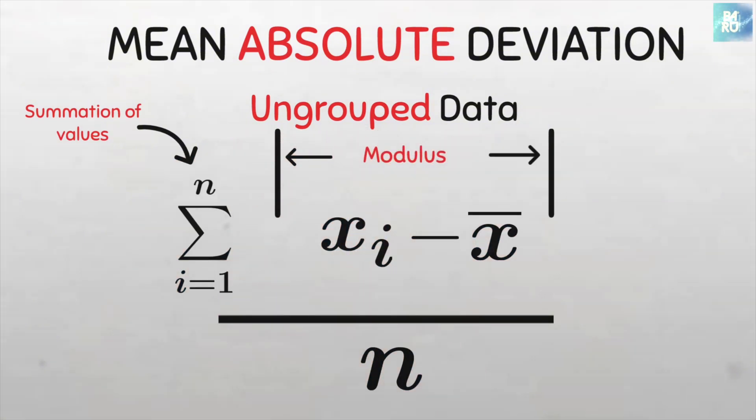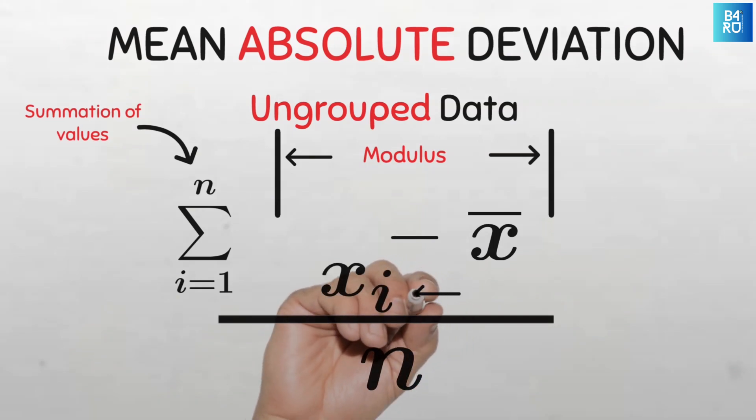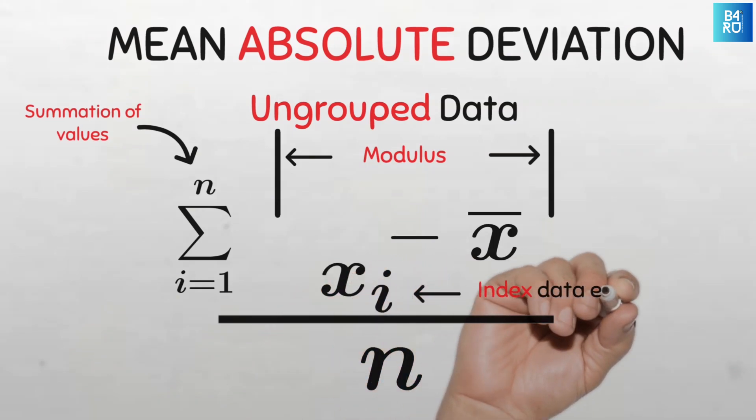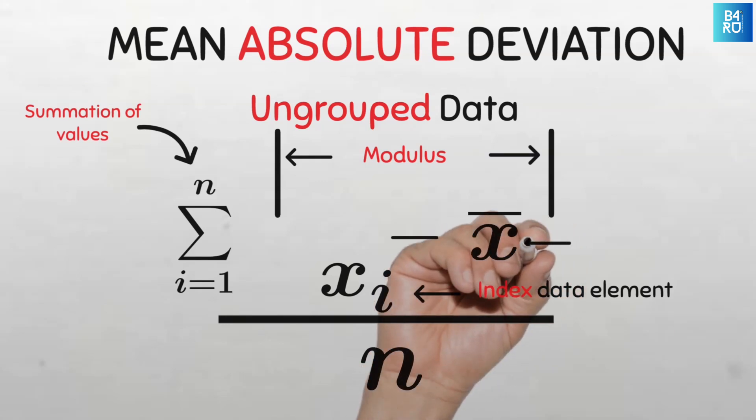It presents the absolute value of whatever is within it. X subscript i is the value of the ith data element, meaning the value of the index data element. X bar is the mean of the data set, and n is the number of data elements.